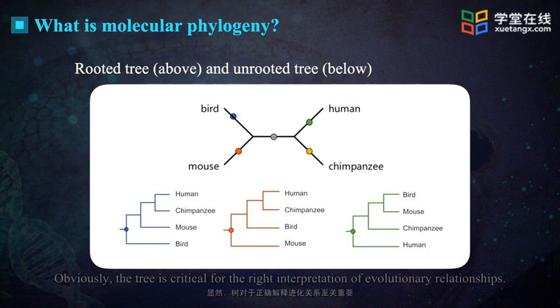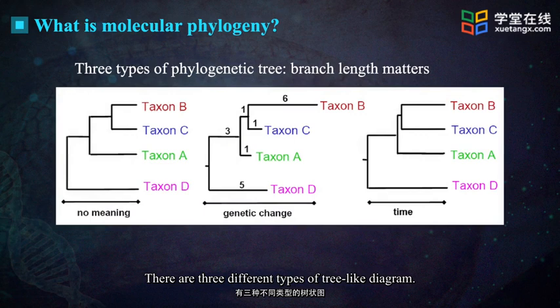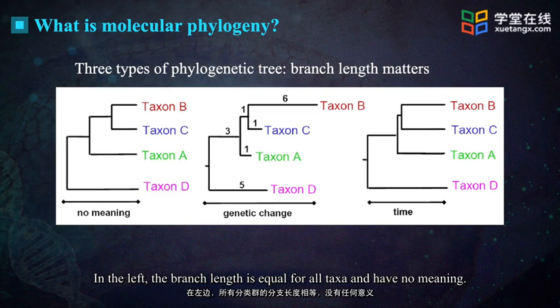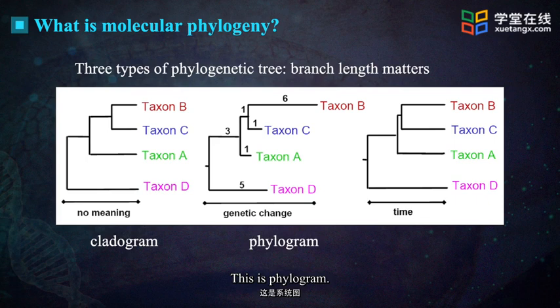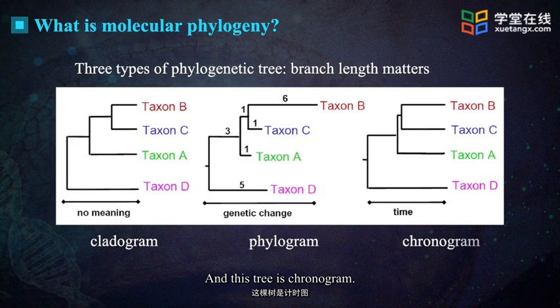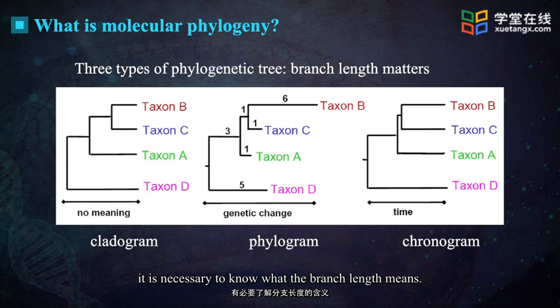Now, let us talk about the branch length. There are three different types of tree-like diagram. In the left, the branch length is equal for all taxa and has no meaning — this type of tree is called a cladogram. In the middle, the branch length represents the amount of genetic change — this is a phylogenogram. And in the right, the branch length means evolutionary time, and this tree is a chronogram. So when you read a tree-like diagram, it is necessary to know what the branch length means.